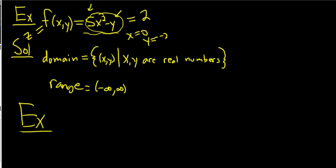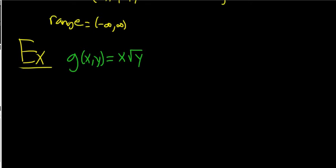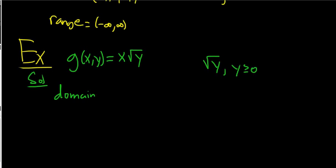How about g(x,y) = x times the square root of y. Let's first find the domain. Notice that we have a square root, and the square root of y tells us that y must be greater than or equal to 0, because it can't be negative. So that's our only restriction.